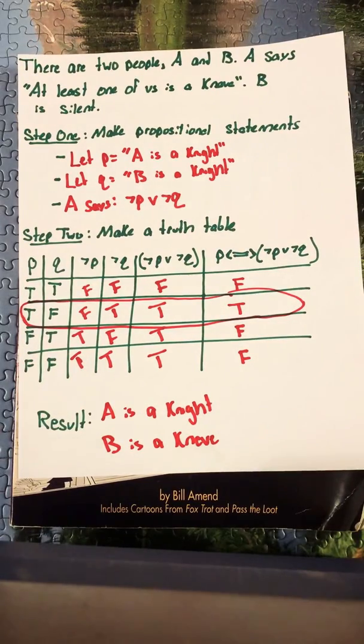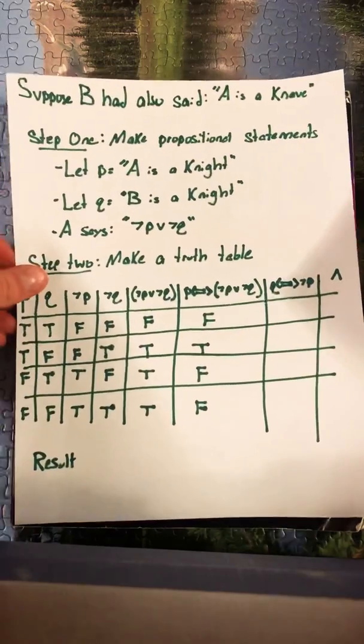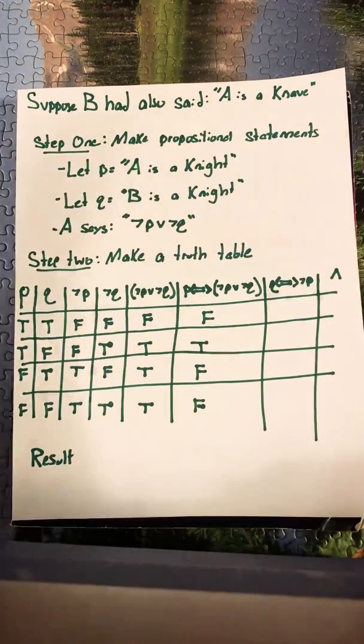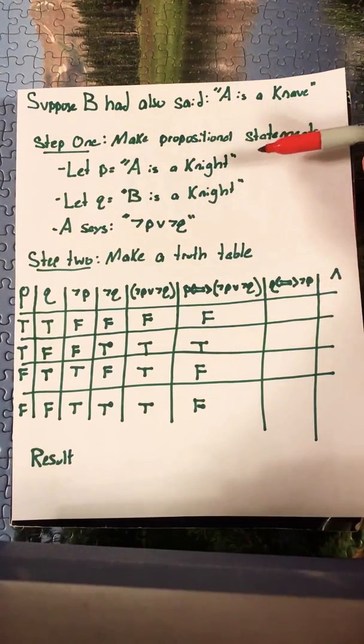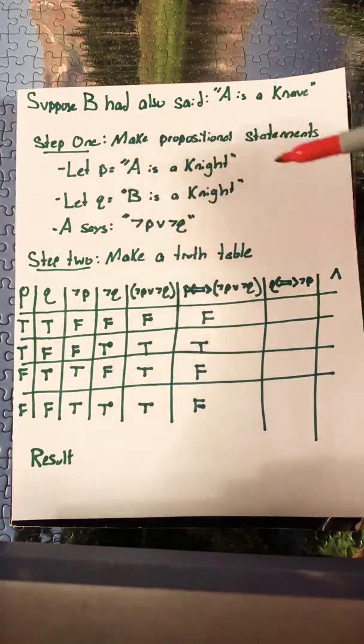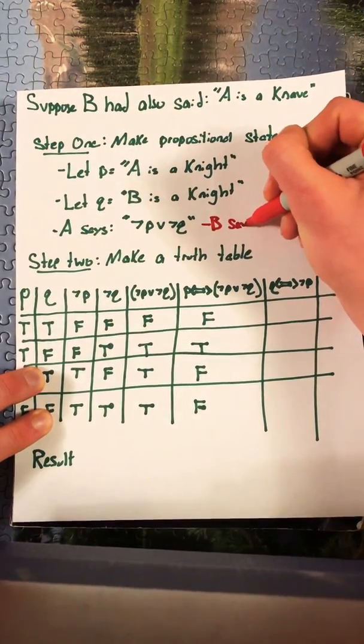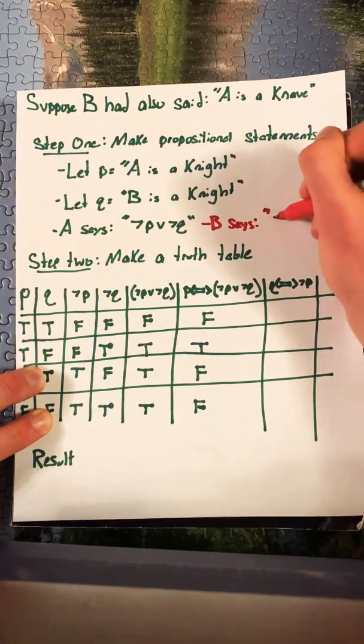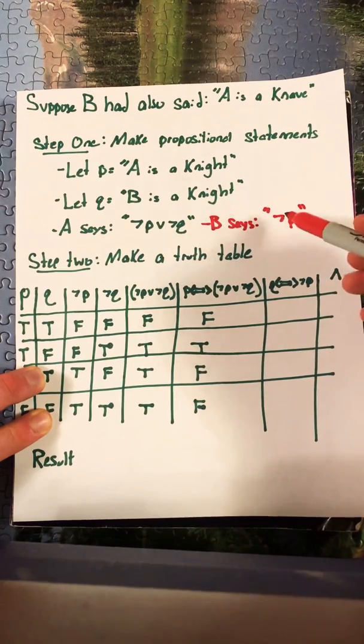Now in some of these Knights and Knaves problems you'll have examples where both A and B are saying something. Let's use the same problem but suppose that B had also said A is a knave. The steps here look very similar. Again we're going to make some propositional statements. We have P being A is a knight, Q being B is a knight, and A saying not P or not Q. But what we also want to add in now is B says not P. So by saying A is a knave, B is saying P is not a knight.